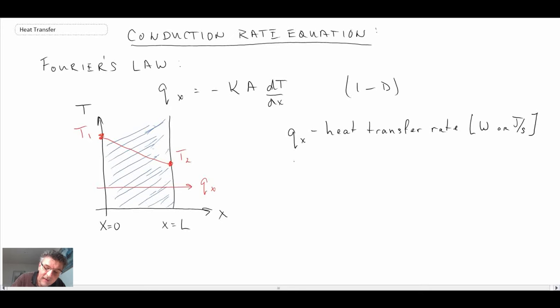The next term is K. K is the thermal conductivity of the material we have the heat transfer going through. The units of K are watts per meter degrees Celsius, or it could be watts per meter Kelvin.